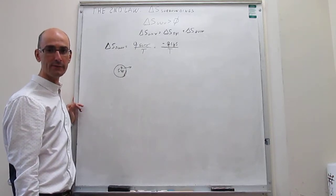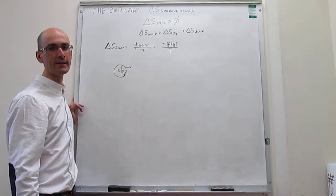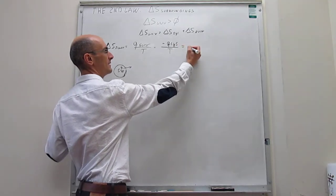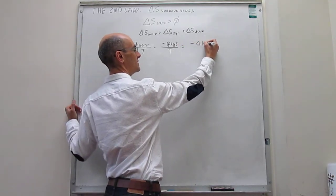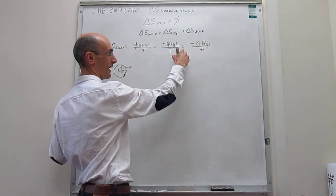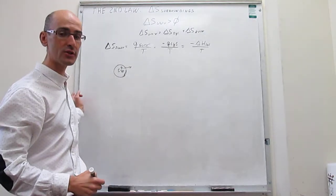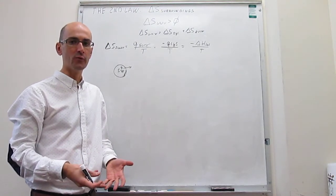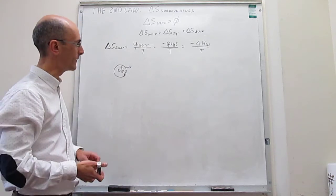We can take this a little further: if we assume we're working at constant pressure, then we know right away what the heat in the system is. At constant pressure, the change in entropy of the surroundings is simply the negative change in enthalpy of the system divided by temperature. This equality requires constant pressure, which is not always true, though it will be true for most of the examples we will see here.